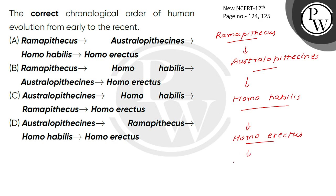After Homo erectus came the Neanderthal man. Neanderthal man used hides to protect their body, buried the dead, had a strong mandible, and a cranial capacity of 1300cc.